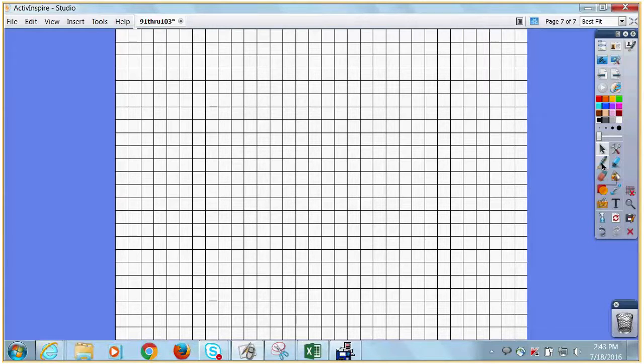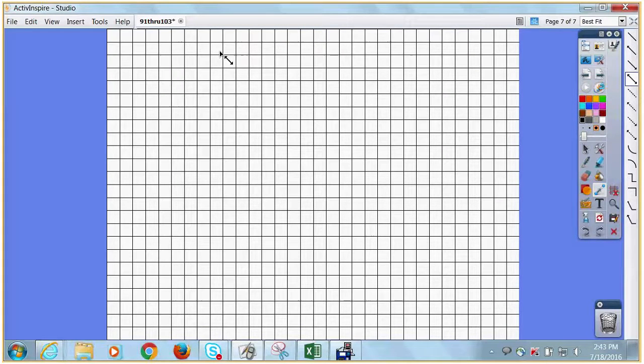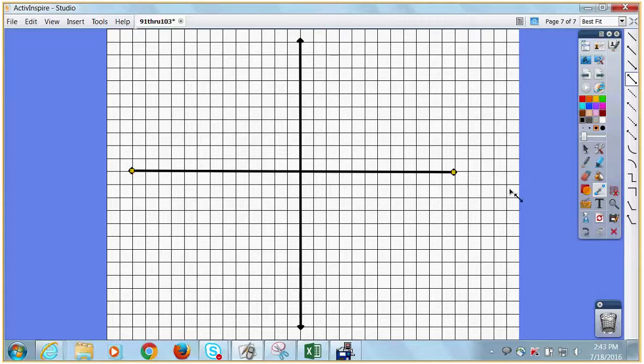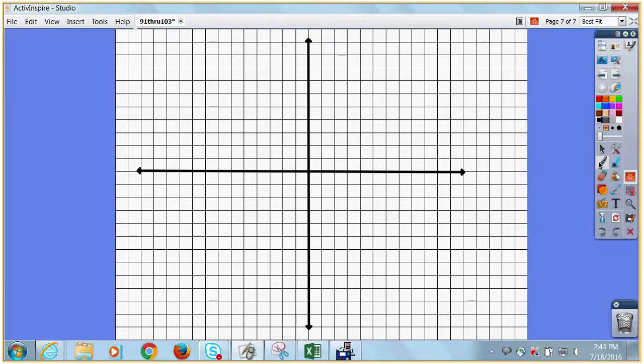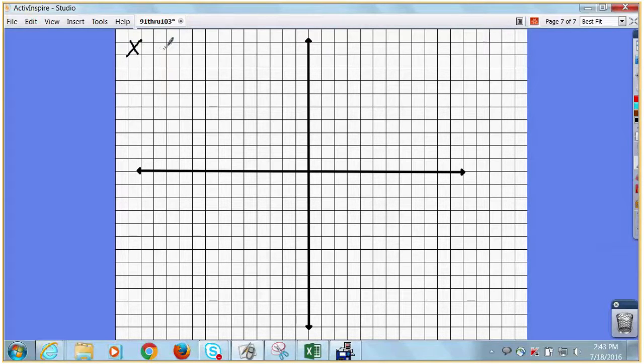Now I'm going to take my handy dandy straight line maker and make a line going this way and going this way. The problem that we're doing is x plus y equals 3.